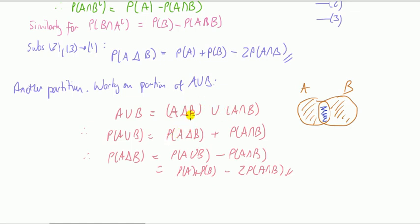So by axiom 3, probability of the union is sum of the individual probabilities. Just rearrange this to get probability of the symmetric difference of B.